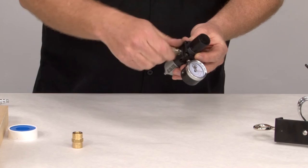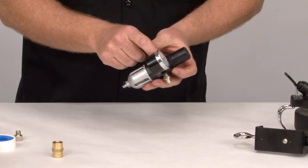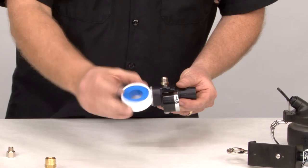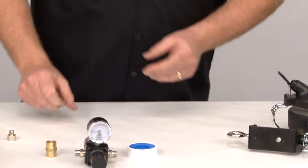You look behind this regulator gauge, and you'll see a little arrow. Very important - the arrow points in the direction the air is flowing, towards the airbrush. You also get some PTFE tape, which is used on the threads to make sure you seal it and have a nice airtight fit.